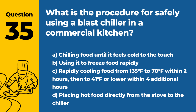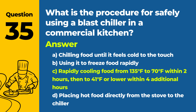Question 35: What is the procedure for safely using a blast chiller in a commercial kitchen? a. Chilling food until it feels cold to the touch. b. Using it to freeze food rapidly. c. Rapidly cooling food from 135°F to 70°F within 2 hours, then to 41°F or lower within 4 additional hours. d. Placing hot food directly from the stove to the chiller. Answer: c. The proper use of a blast chiller involves rapidly cooling hot food from 135°F to 70°F within 2 hours, then to 41°F or lower within 4 additional hours, to minimize the time food spends in the temperature danger zone.